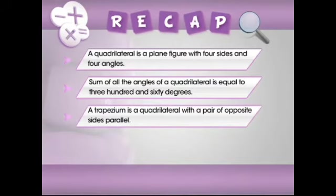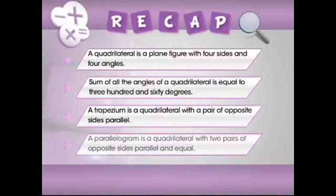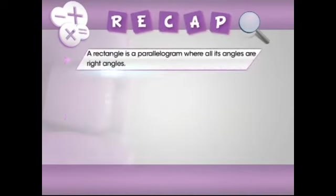A trapezium is a quadrilateral with a pair of opposite sides parallel. A parallelogram is a quadrilateral with two pairs of opposite sides parallel and equal. A rectangle is a parallelogram where all its angles are right angles.